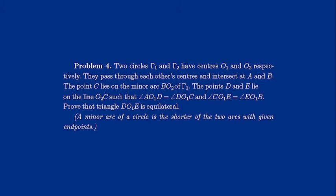Prove that triangle DO1E is equilateral. A clarification: a minor arc of a circle is the shorter of the two arcs with given endpoints.